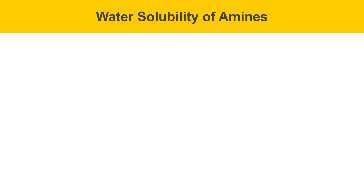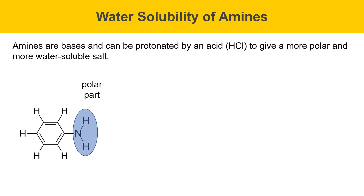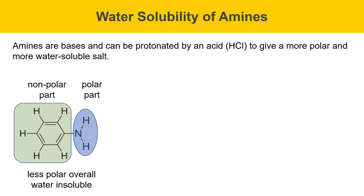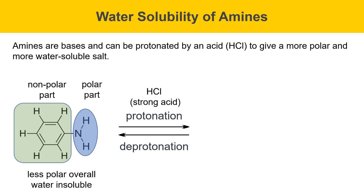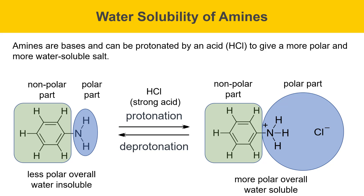Amines are bases and can be protonated by an acid like HCl to give a more polar and more water-soluble salt. For example, aniline has a polar amine group but a much larger nonpolar part, making it water-insoluble. When put with HCl, the nitrogen lone pair grabs the proton off HCl, generating an ammonium salt. This salt has a much larger polar portion with the same nonpolar part, making it overall more polar and more water-soluble. So you can manipulate the solubility of organic molecules with acidic or basic functional groups to change their water solubility.